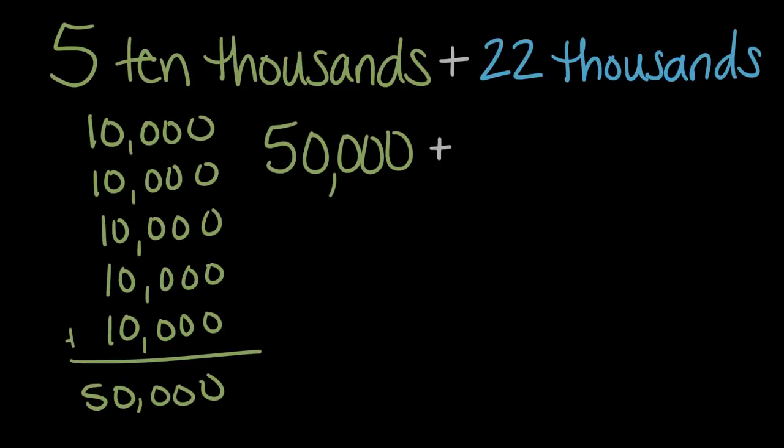Plus 22 thousands, 22 thousands, remember when we did the 19 thousands, if we wrote one thousand, it would be 1,000. If we wrote 1,000 two times, it would be 2,000. If we wrote it 22 times, then it would be 22 thousands. There would be 22,000.